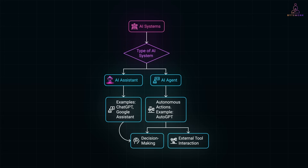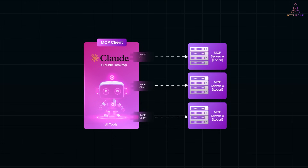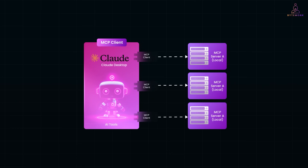In MCP architecture, an AI agent is a type of AI assistant that actively interacts with external tools to achieve goals. It includes the LLM and decision-making logic that determines when to call external tools. The MCP client is a component inside the AI agent that acts as a connector or driver between the AI and external tools — the MCP servers. The AI agent does not communicate with tools directly; instead, it relies on the MCP client to handle the interaction. For instance, if the AI agent wants to connect to both a calendar and a database, it would spawn two MCP clients, one for each server.